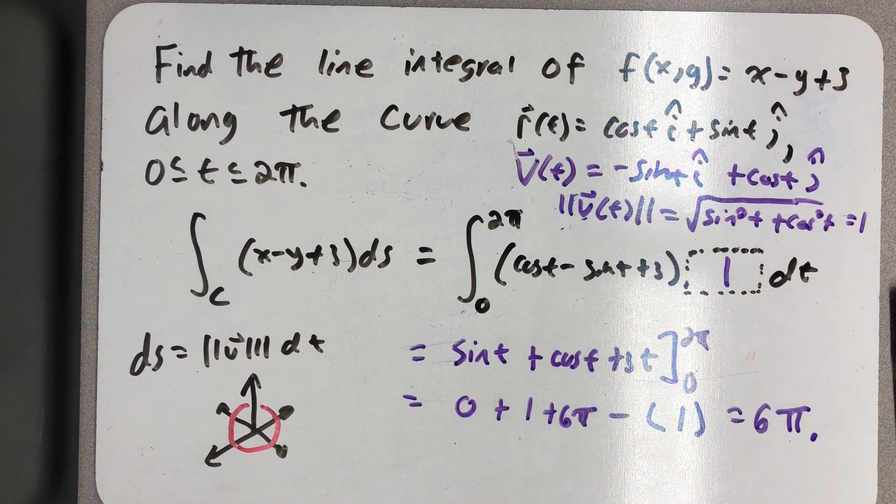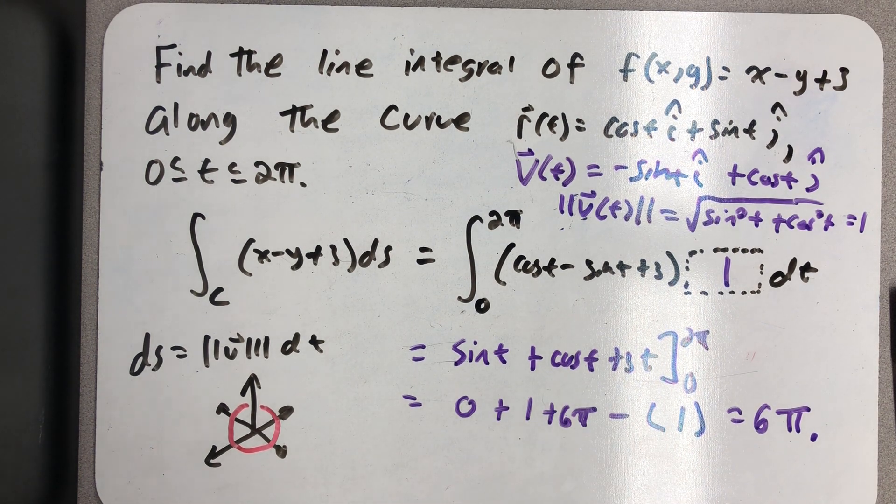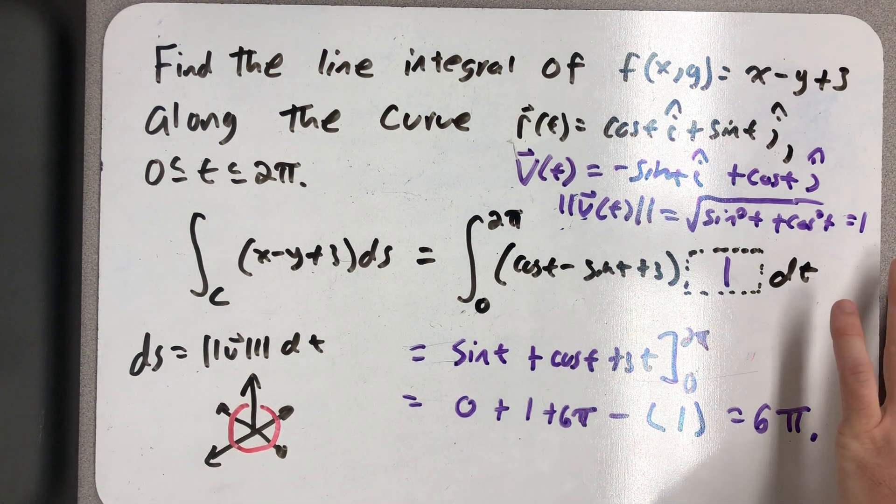All right, so now what I want to do is I want to think about what this function would look like. Well, that's z = x - y + 3. That's the equation of a plane in space.